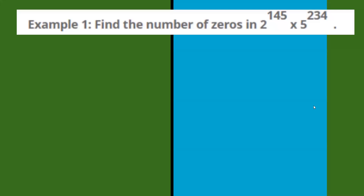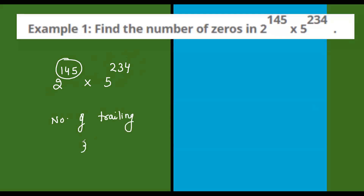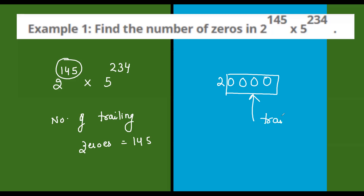Now find the number of zeros in 2 to the power 145 times 5 to the power 234. This looks relatively tough, but it is actually the easiest one we've done. Which power is less — 2 power or 5 power? The lesser power is 145. So the number of trailing zeros is equal to 145. Trailing zeros means how many consecutive zeros appear after the number. So here it is 145. This is the concept of trailing zeros — exams always ask this type of question.